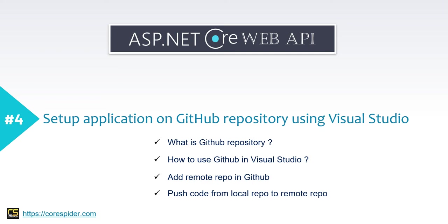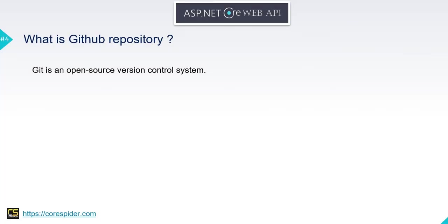Let's first understand what is a GitHub repository. GitHub or Git is an open source version control system. A version control system keeps the revision and modification of code in a central repository. This allows developers to easily collaborate — they can download a new version of the software, make changes, and upload the newest version. Each developer can see the new changes, download them, and contribute. Like GitHub, you may know other version control systems like TFS, Team Foundation Server, and SVN. But GitHub is open source, meaning we can contribute code to the GitHub repository.